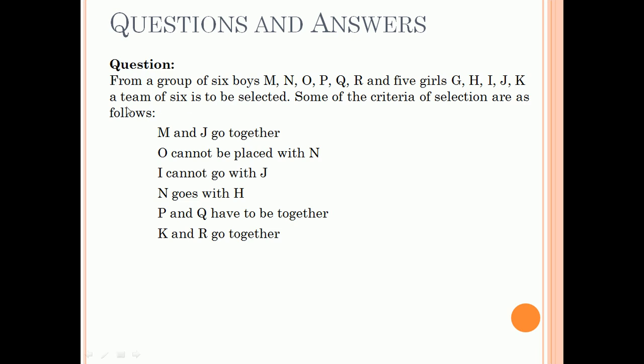Some of the criteria of selection are as follows: M and J go together, O cannot be placed with N, I cannot go with J. Now the condition states that M and J are always together, similarly P and Q, and N and H, and K and R. But O can never go with N and I can never go with J.